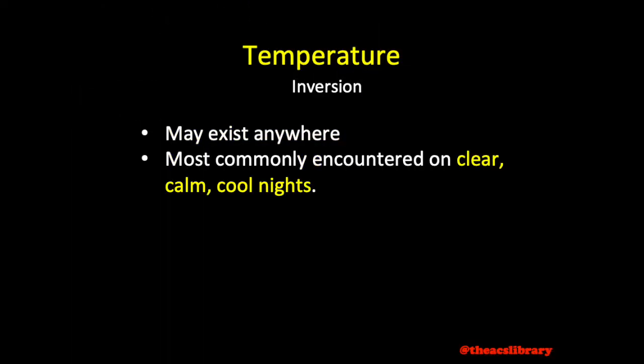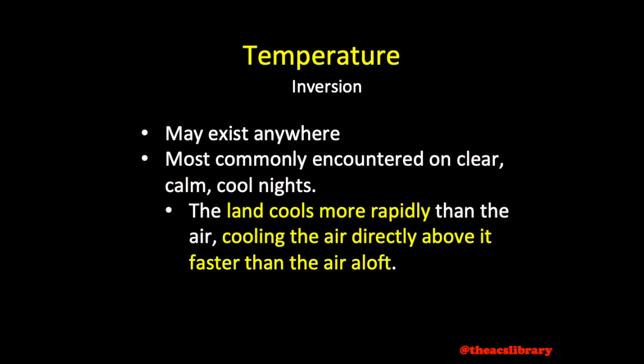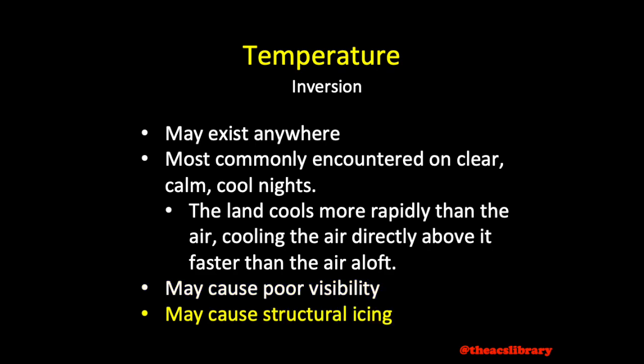Temperature inversions can exist anywhere, but they are most commonly encountered near the surface on clear, cool nights with little wind. As the ground cools at a much more rapid rate than the air above it, the air immediately above the surface cools at a faster rate than the air at higher altitudes. This may cause poor surface visibility by trapping smoke, haze, or fog below the inversion layer. A hazard associated with temperature inversions may be the possibility of warmer precipitation aloft falling through subzero air below, causing clear ice to form on any aircraft flying through the lower, colder air mass.